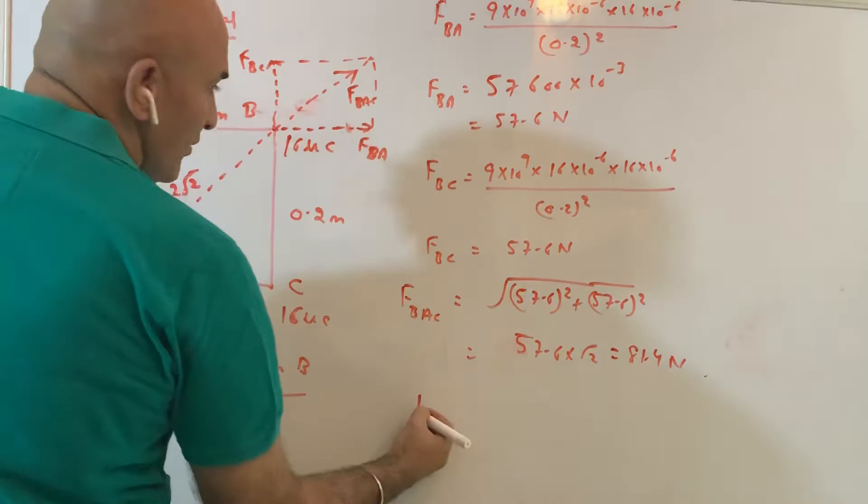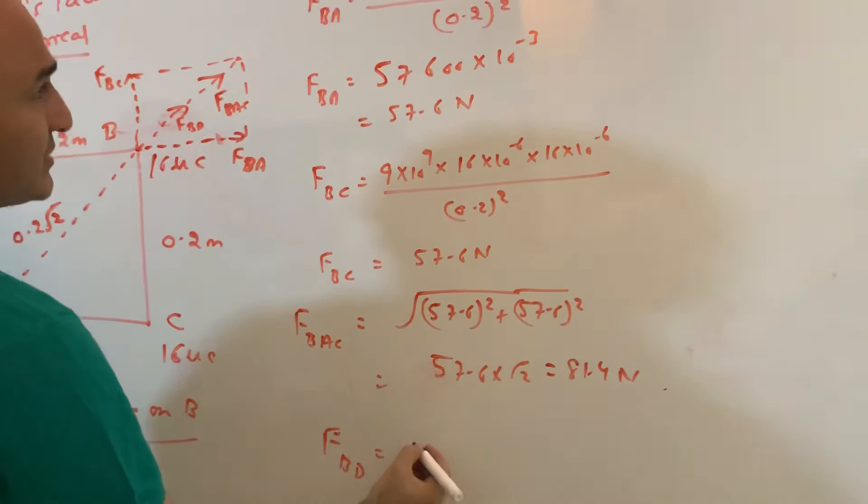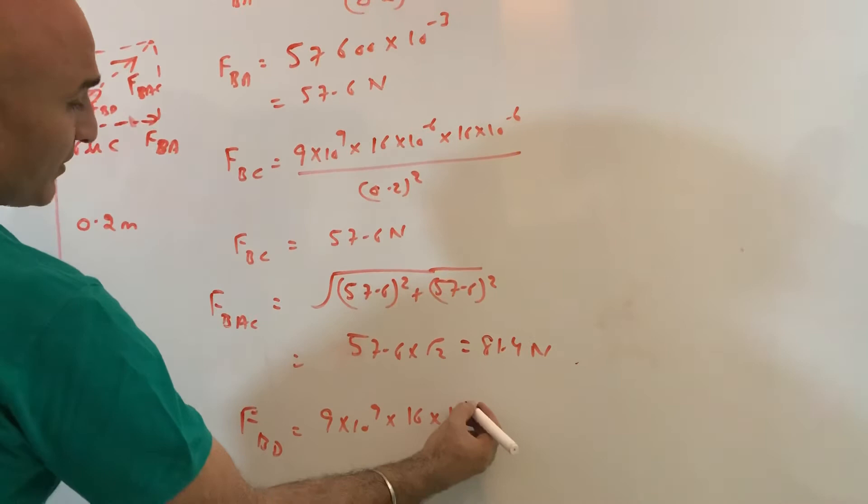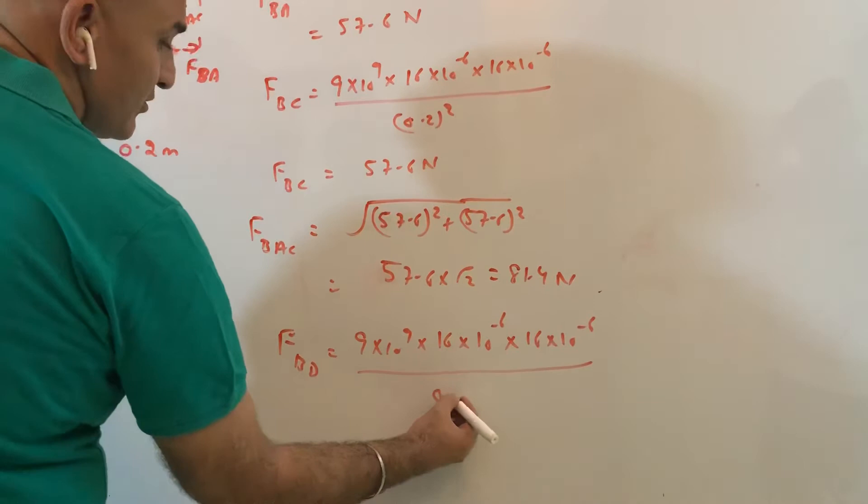Which is 9 into 10 power 9 into 16 into 10 power minus 6 into 16 into 10 power minus 6 divided by 0.2 into root 2 whole square.